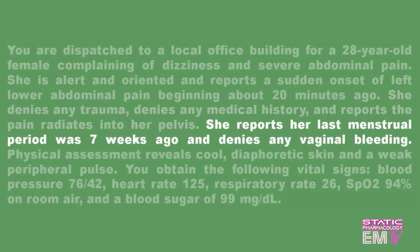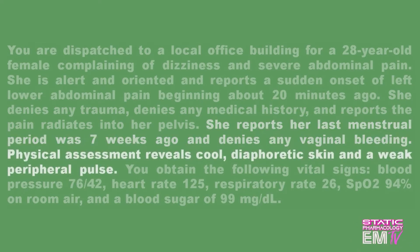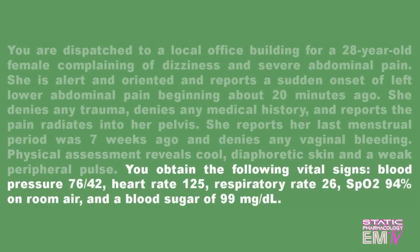She reports her last menstrual period was 7 weeks ago and denies any vaginal bleeding. Physical assessment reveals cool, diaphoretic skin and a weak peripheral pulse. Vital signs: blood pressure 76 over 42, heart rate 125, respiratory rate 26, SpO2 94% on room air, and a blood sugar of 99.